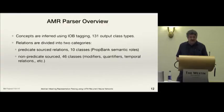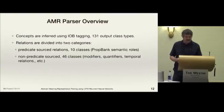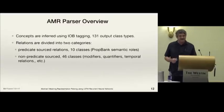Relations are divided into two categories. There's prop bank semantic roles, we call those ARGs. They're predicate sourced. And also non-predicate sourced. So there's 46 of those. Non-predicate sourced relations are modifiers, quantifiers, temporal relations, etc.